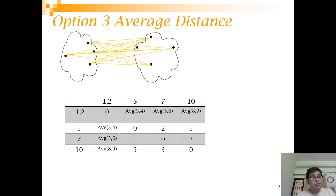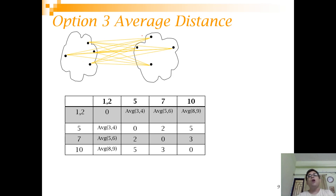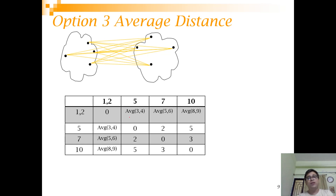The third category is average distance. In average distance, you calculate the distance of each point with all other points in the other cluster and then take the average. For example, the average of distances 3 and 4 would be 3.5.